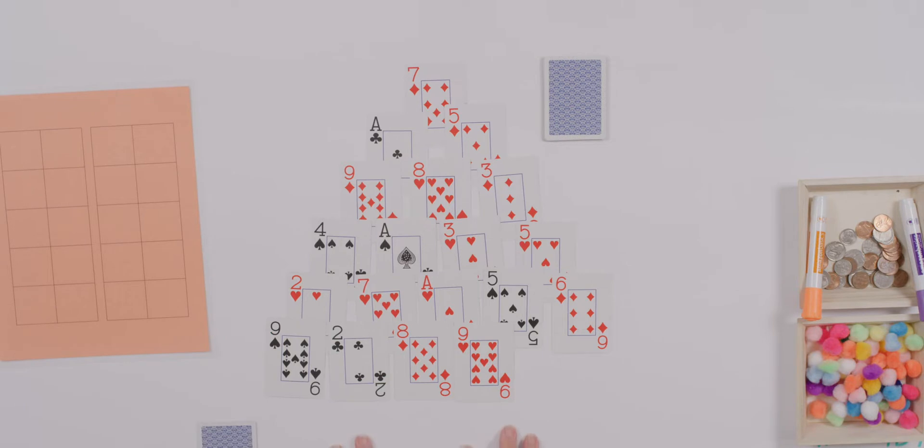There does happen to be something else that makes ten. We don't even have to get into our other rows yet, do we? You got it. Eight and two also makes ten. We could count on. Eight, nine, ten. Great.